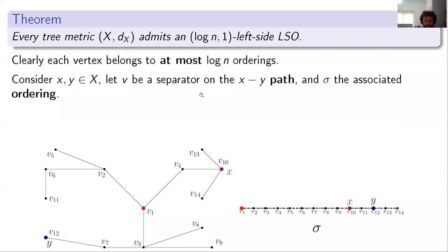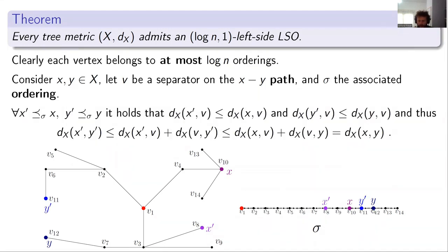For the stretch guarantee: consider a pair of points X and Y, and let the special ordering be the one constructed with respect to the first separator on their unique path. Take any pair X' and Y' to the left of X and Y in that ordering. Since X' comes before X, the distance from X' to the separator is smaller than the distance from X to the separator, and similarly for Y'. Therefore the distance between X' and Y' through the separator is smaller than the distance between X and Y through the separator, which is exactly the tree distance between X and Y. This proves the stretch promise.